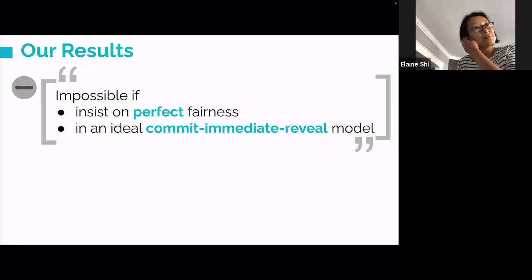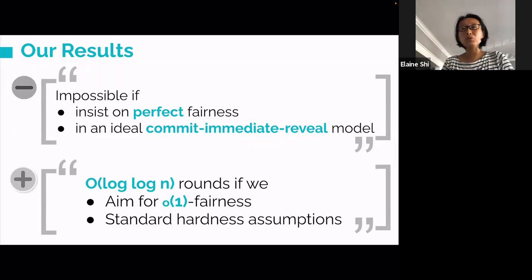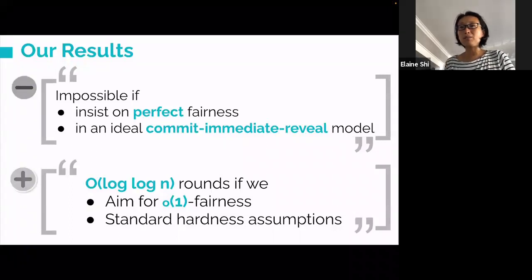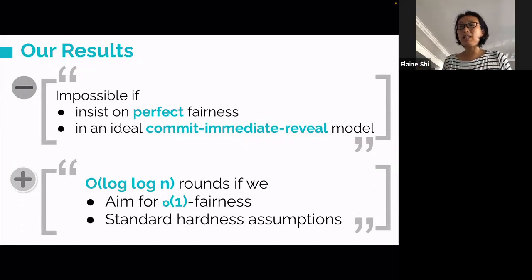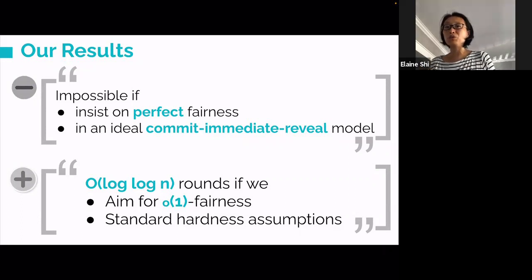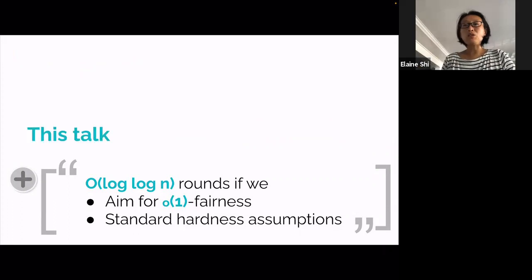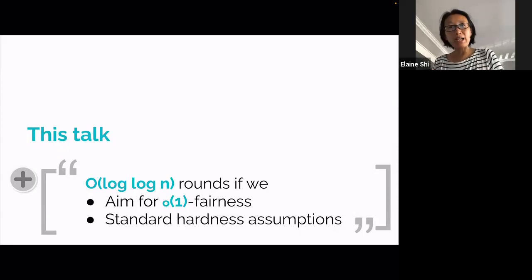This brings us to our main upper bound result. If you're willing to make a couple of relaxations, we can overcome the log N barrier. First, we relax the fairness notion to approximate fairness—what this slide calls little-o(1) fairness. Second, we cannot restrict ourselves to the commit-and-immediately-reveal model; we now use standard cryptographic assumptions and crypto in a general way. In this talk I only have time to discuss the upper bound; I don't have time to show you the lower bound proof.